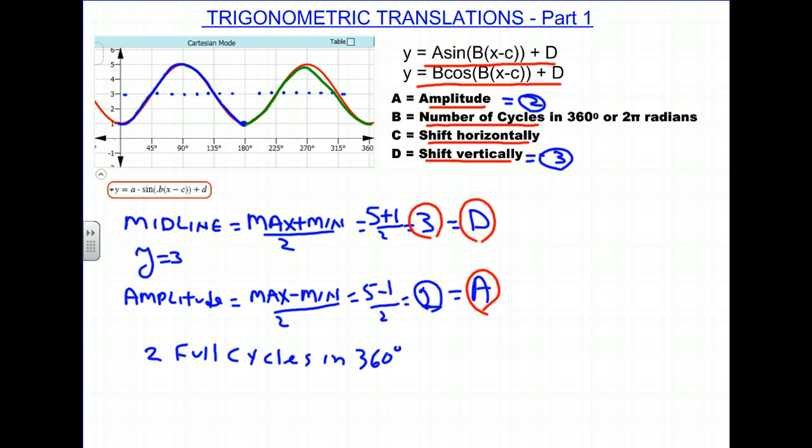And therefore, that gives us our value for B. And let's put that up here. So this is equal to 2. So we've gotten our A, we've got our B, we've got our D. And now we look for our C, which is the shift horizontally.